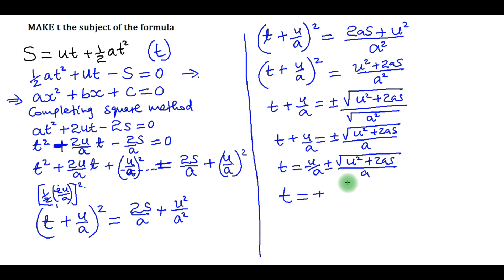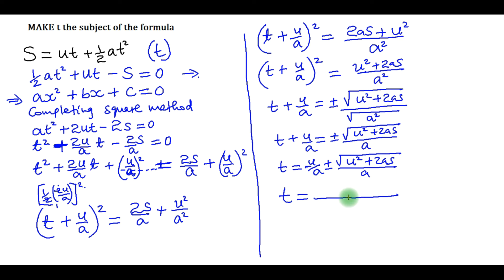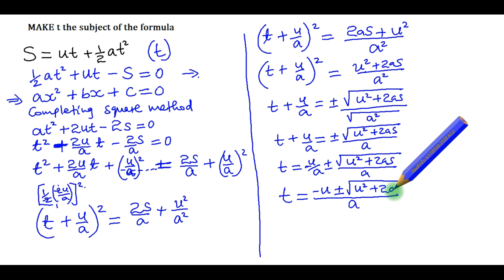Putting everything under one denominator, the LCM is a, so t = (−u ± √(u² + 2as)) / a. And now we have made t the subject of the formula. That's how we make t the subject of the formula.